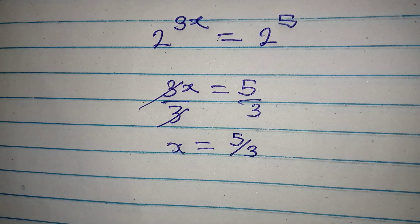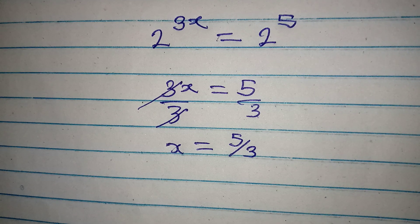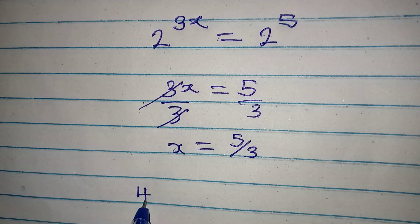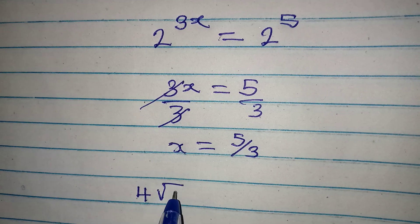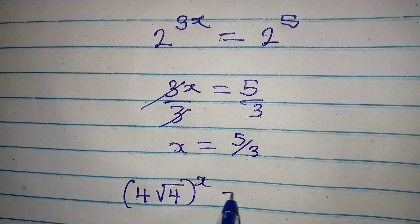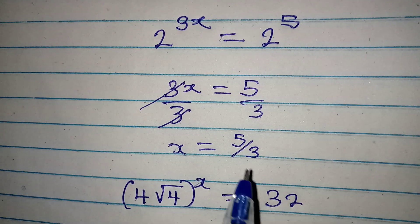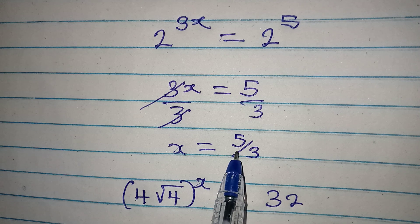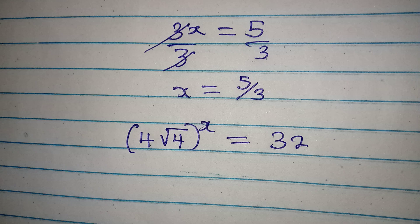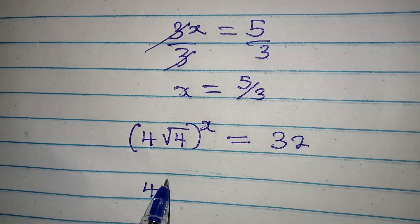Now let's verify — if we substitute x = 5/3 back into the original equation, 4 times the square root of 4 raised to the power of x equals 32, will it hold? Let's give it a try with 5 over 3.